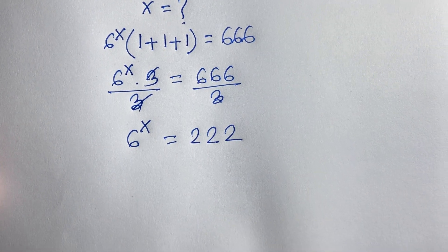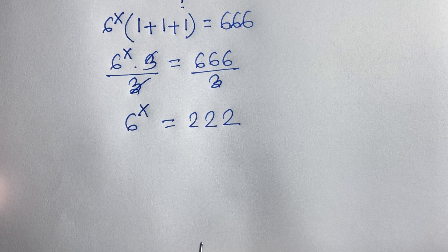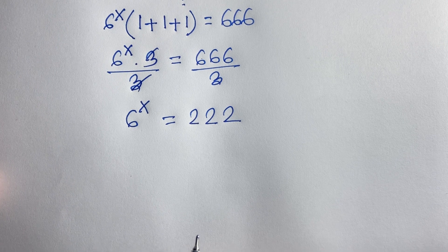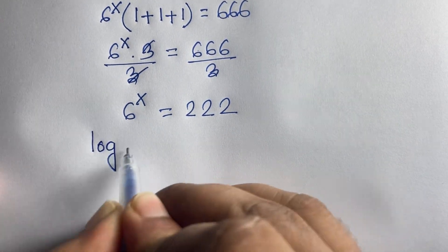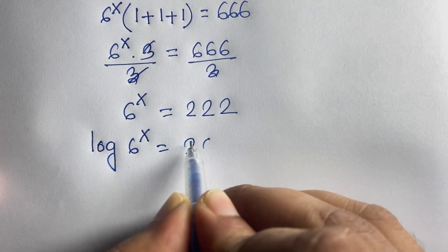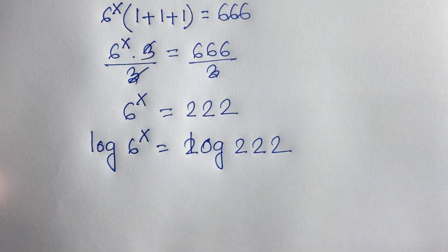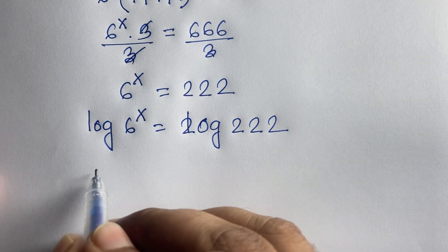Now if I want to find out the value of x in this exponential equation, I'll apply the natural log to both sides, which will give us the value of x easily. So: log of 6 to the power x is equal to log of 222. According to logarithm rules, x moves to the front.